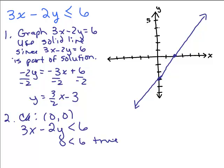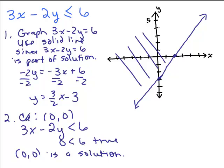0 is less than 6 and is that true? So that means 0, 0 is a solution, just one of them. So I'm going to shade that side where 0, 0 is. There we go.